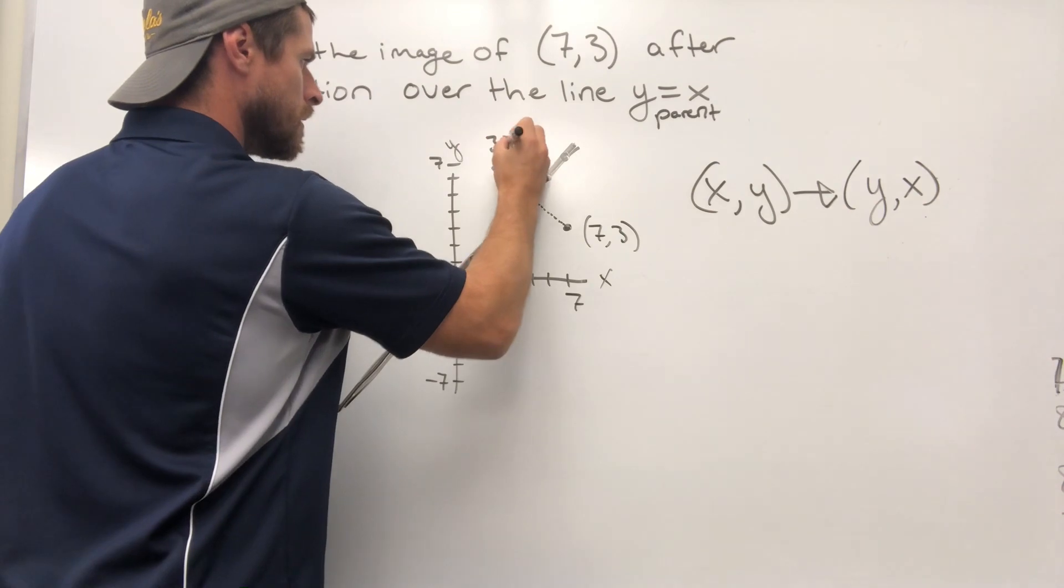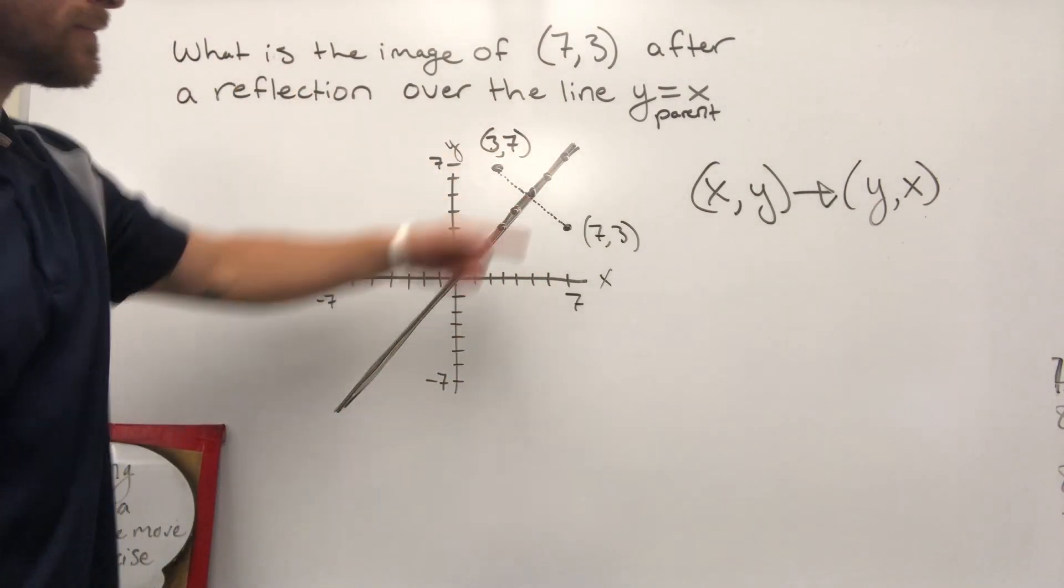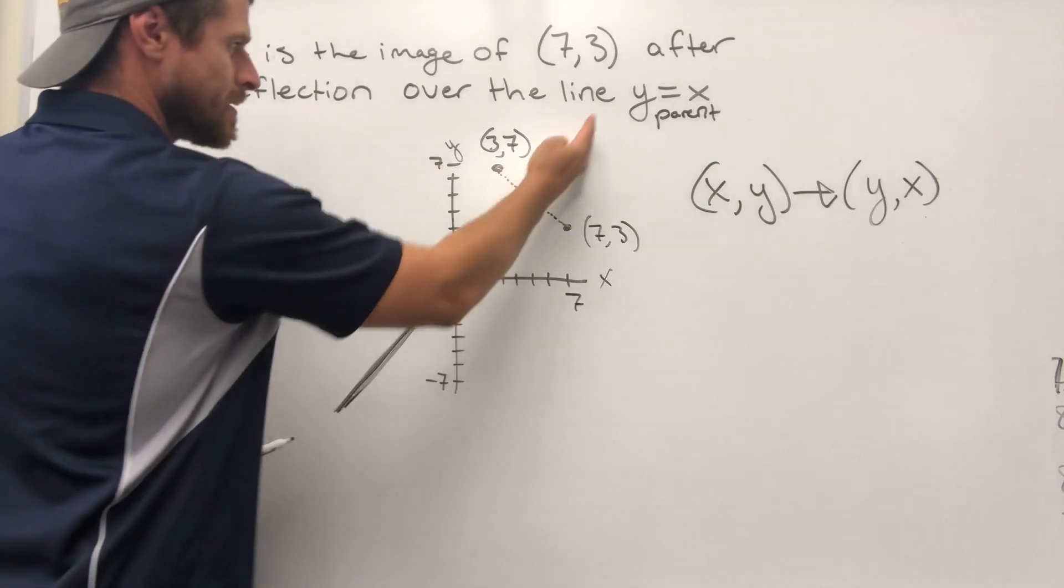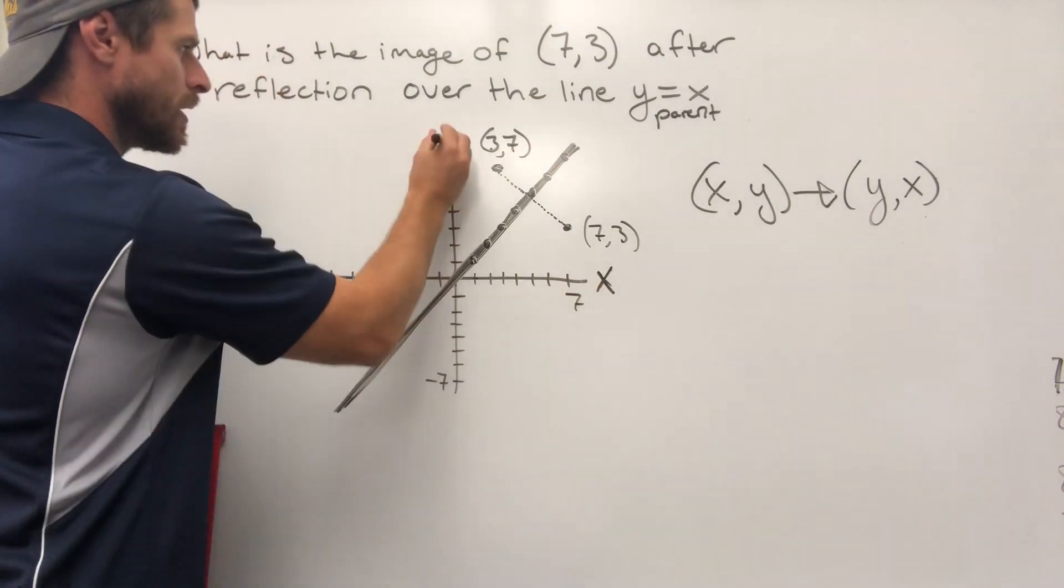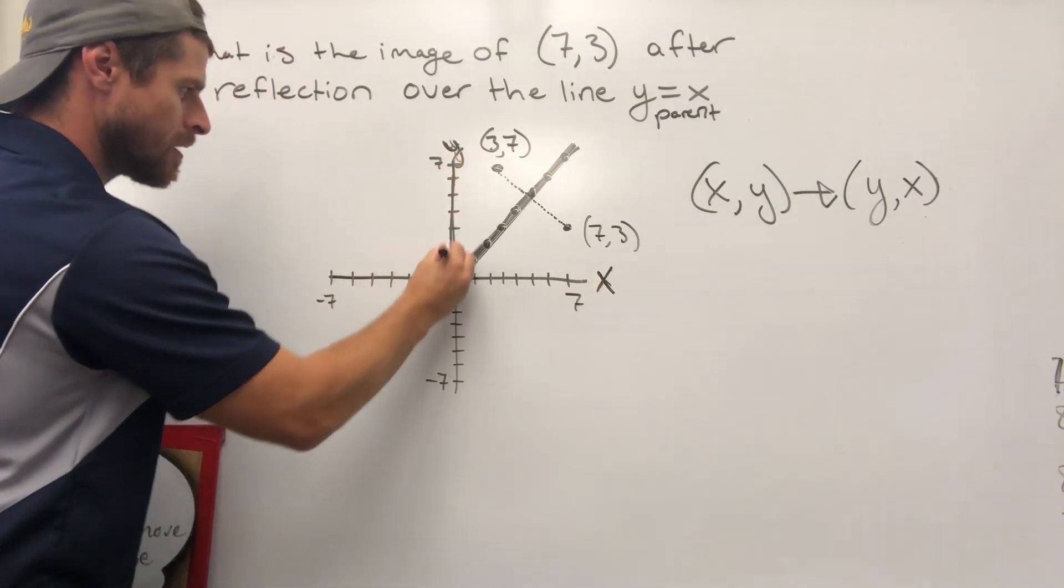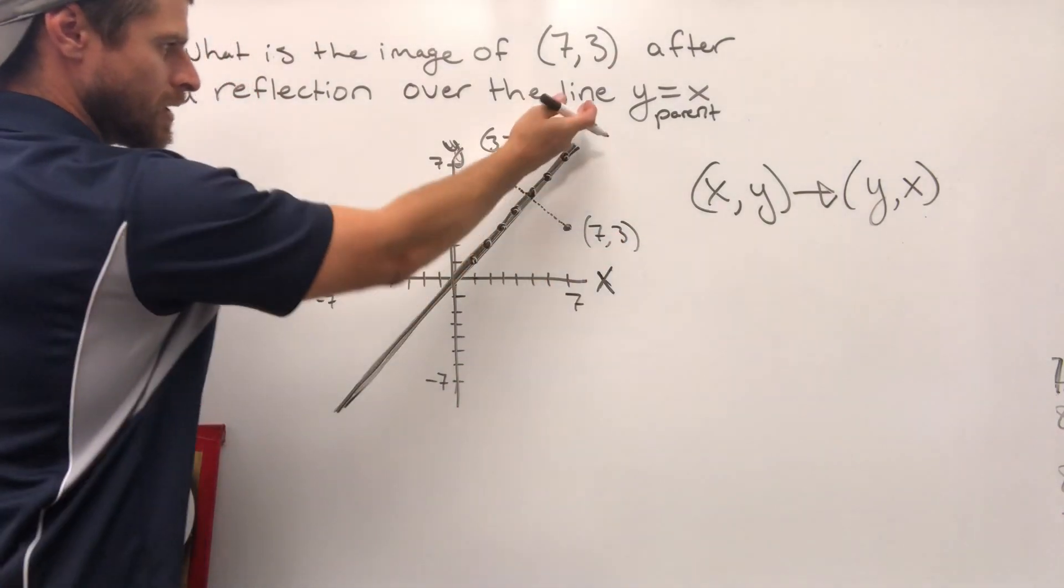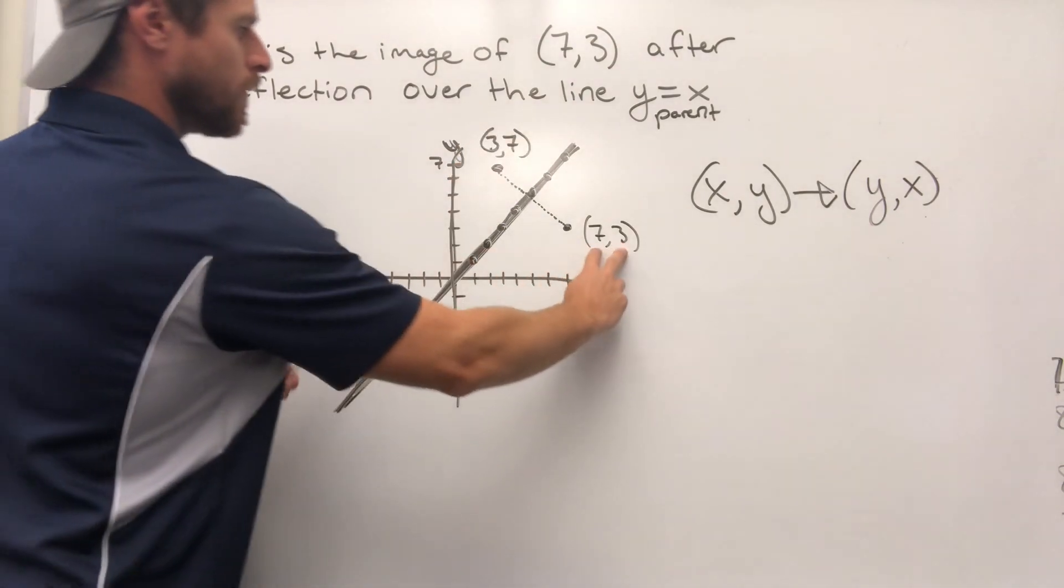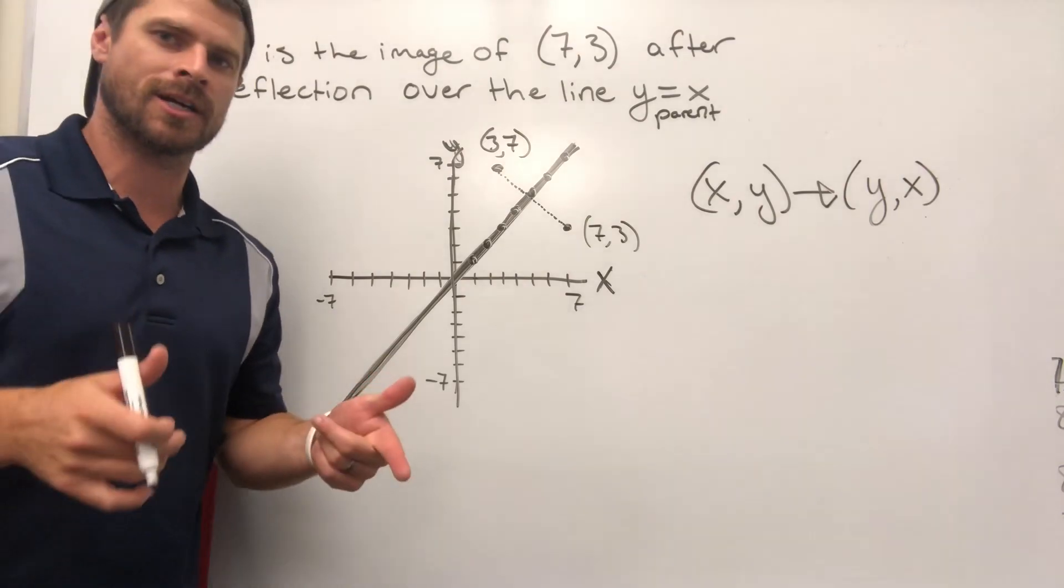3 over, 7 up. Our new point is (3, 7). How did we get there? We reflected over y equals x, which is different than reflecting over an x-axis or a y-axis. Here are our axes. Reflecting over those would just change one of the values while reflecting over the y equals x line is going to flip the values. Hopefully this makes sense. Study hard and good luck on your upcoming test.